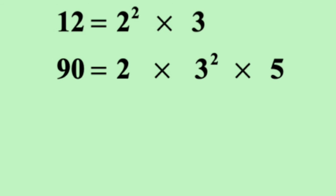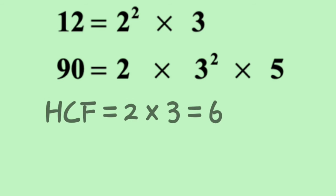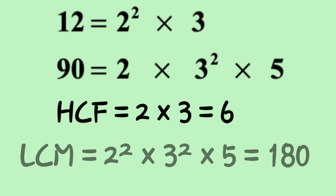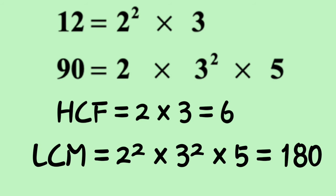Next, consider the two numbers 12 and 90. The factorization of 12 is 2² × 3 and 90 is 2 × 3² × 5. Here 2 and 3 are the common factors. Therefore HCF = 2 × 3 = 6. For the LCM, take the greatest power of all the factors: 2² × 3² × 5 = 180.